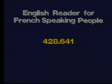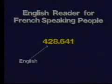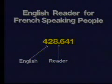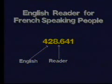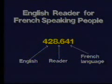Let's take another example: English Reader for the French-speaking pupil. The number will be 428.641. As we already know, the number for English is 428 and 86 is the number for reader given in Table 4. Here in Table 4, we are directed to use Table 6 for the second language. When we use Table 6, we find the number given for French language is 41.